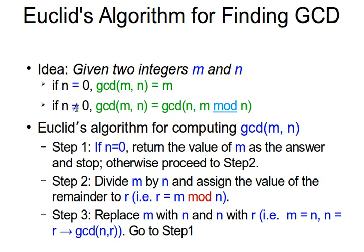If n is 0, the GCD is m. However, if n is not 0, we find the remainder of m divided by n using the mod operator — r = m mod n — and then we repeat the check. The Euclidean algorithm works as follows: Step 1 — check the value of n. If it's zero, return m as the answer. If not, move on to Step 2.